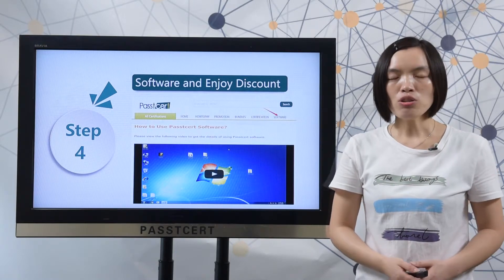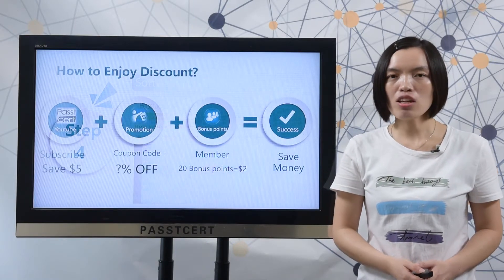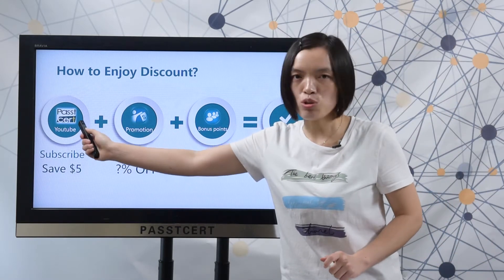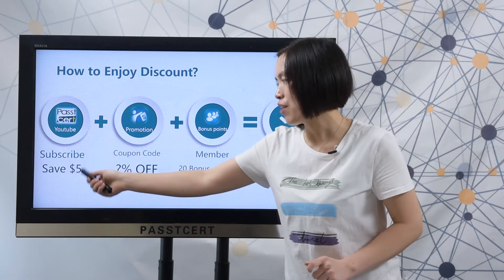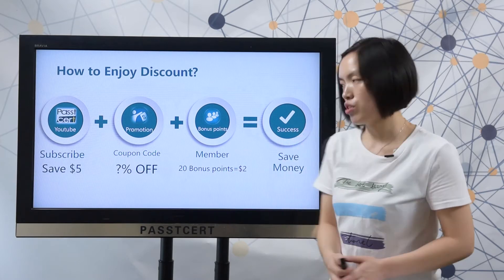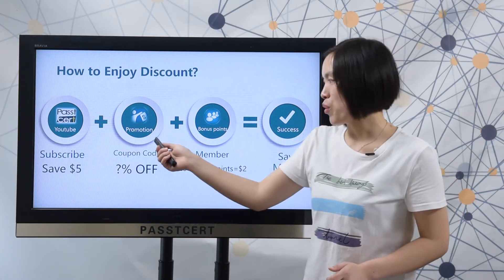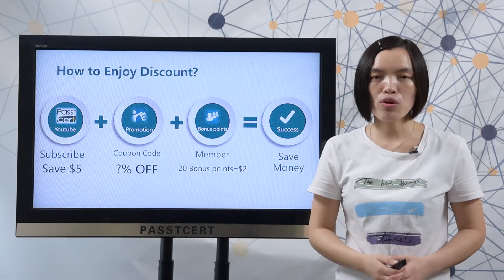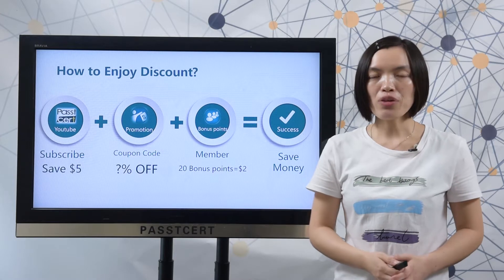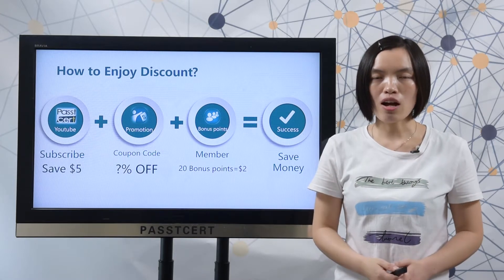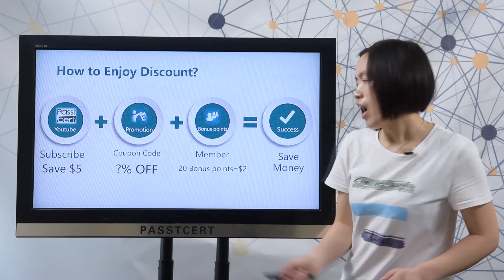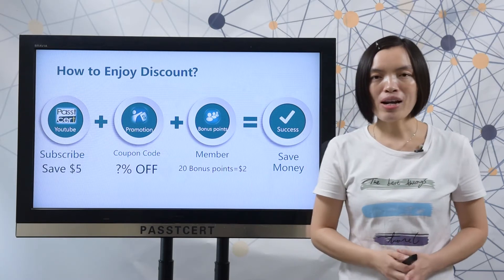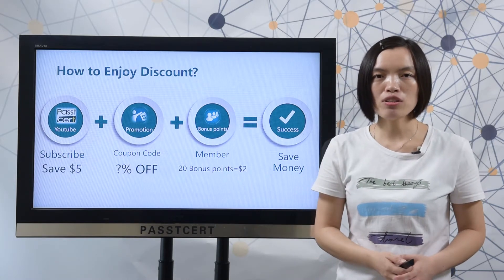Finally, let's view how to enjoy a discount at PathDisorder.com. Subscribe to PathDisorder.com and you can get a 5 USD coupon code. In our promotion page, we will show you our current sales promotion. You can use a coupon code to enjoy a discount. After you become our member, you can get 20 balance points.